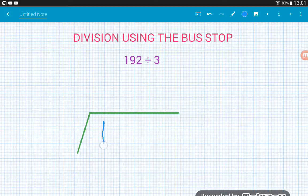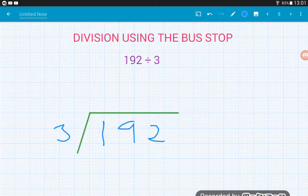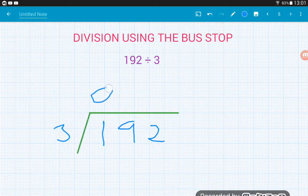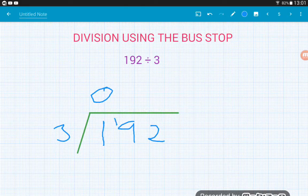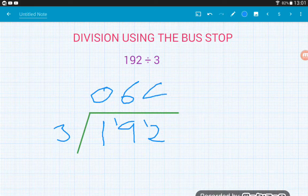192 divided by 3. So 192 under the sign, 3 on the left. How many threes are in 1? Three doesn't go into 1 so either we can leave it blank above the 1 or we can put zero. And then we just treat the 1 as a remainder, carry it over to the 9. So how many threes are in 19? Six, which would be 18. Then we got a remainder of 1. 3 into 12 goes 4 times.